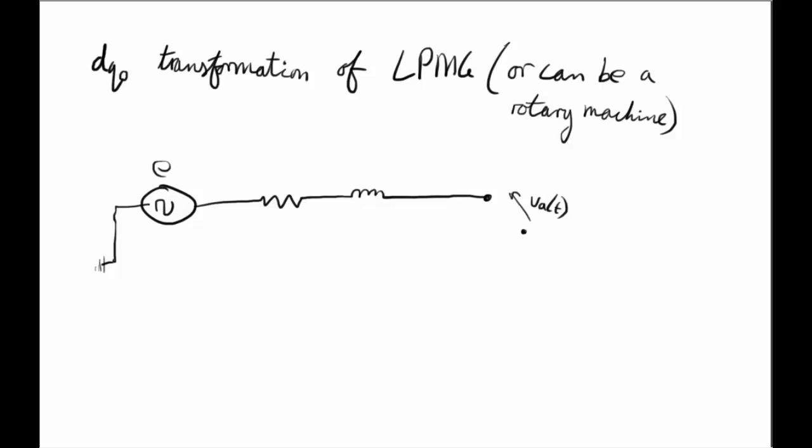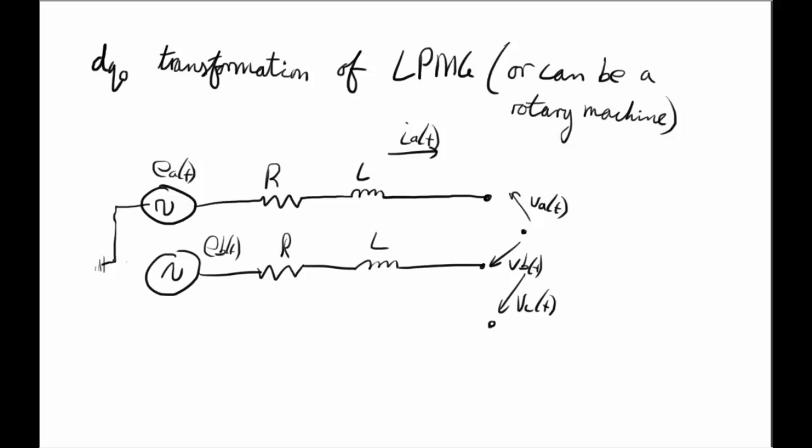So this is the basic three phase circuit that you would have. You'd have the excite or the EMF which would be the induced voltage Ea, and then the resistance and the inductance of the machine, and then this would be controlled by the voltage of Ea which is on the terminals of the generator.